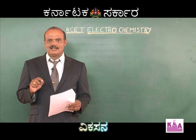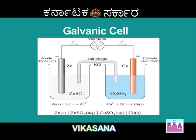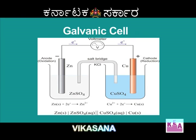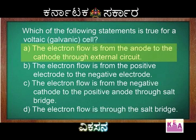In the theoretical explanation, electrons are moving from anode to cathode through the external circuit. In a galvanic cell, the anode acts as the negative electrode and the cathode acts as the positive electrode. Therefore, electrons are moving from the negative anode to the positive cathode. So electron flow from anode to cathode through the external circuit is correct — option A is correct.